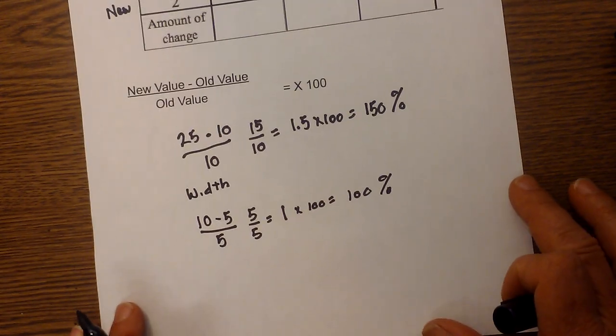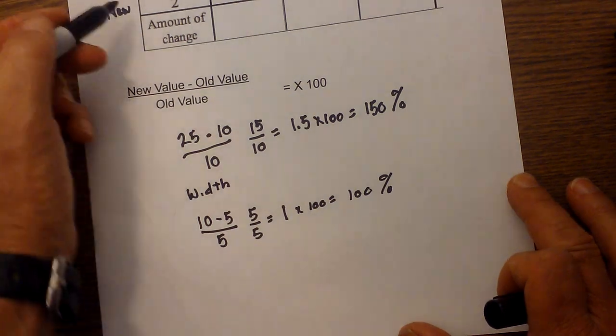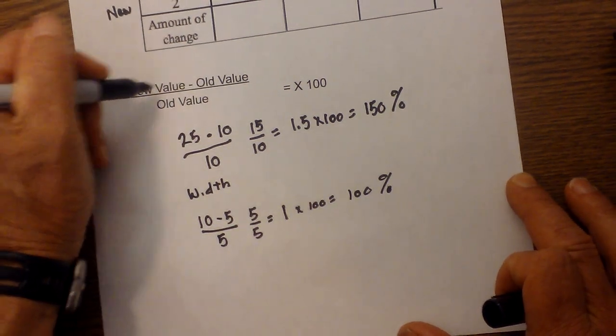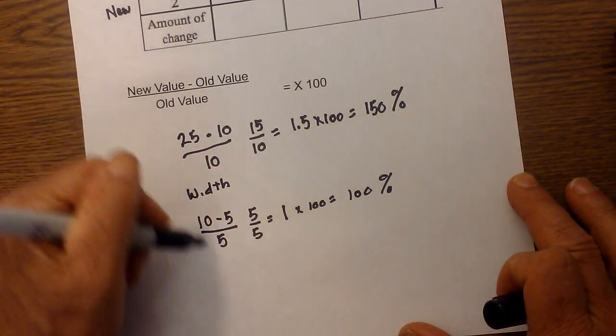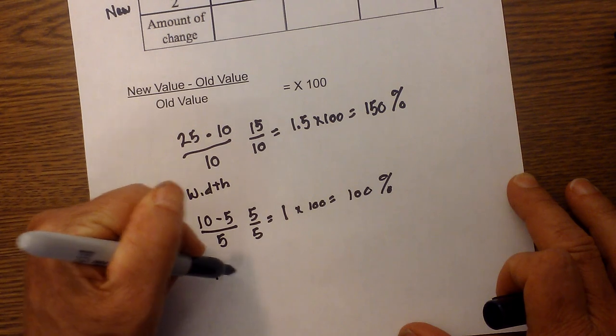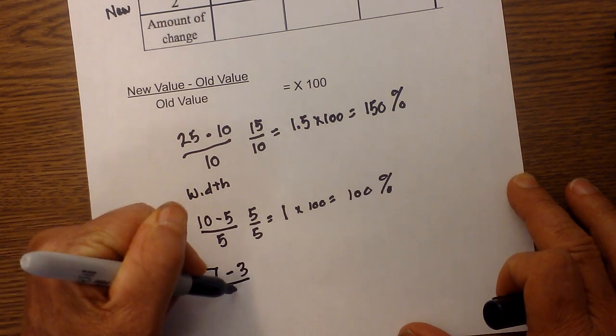And finally, let's do our mass. Our new value, remember the formula, new minus old over old is 7 minus 3 over 3.